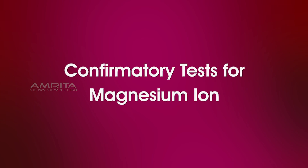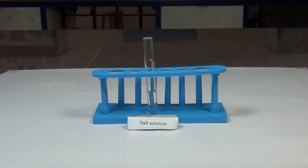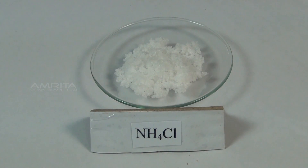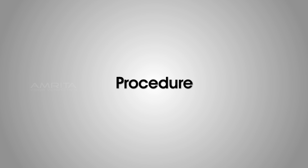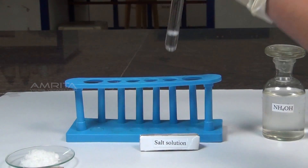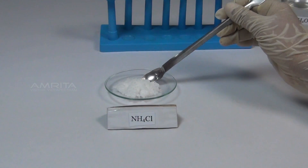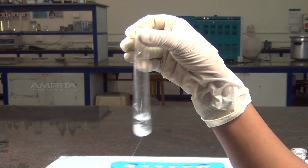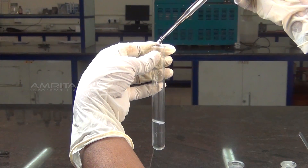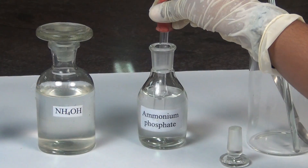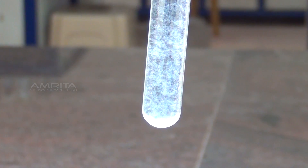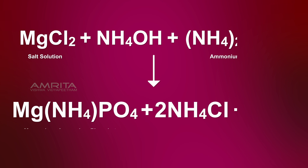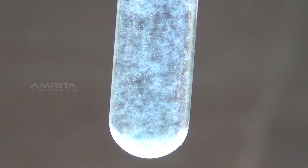Next, we look at the confirmatory tests for magnesium ion. Ammonium Phosphate Test. Materials required: salt solution in a test tube, ammonium chloride, ammonium hydroxide, spatula, dropper, and glass rod. Procedure: Take a small quantity of salt solution in a test tube. Add a small quantity of ammonium chloride using a spatula. Shake the test tube well. Using a dropper, add a small quantity of ammonium hydroxide. Then add a small quantity of ammonium phosphate solution. Scratch the inner sides of the test tube using the glass rod. A white precipitate of magnesium ammonium phosphate is formed due to the reaction of magnesium ions with ammonium phosphate.